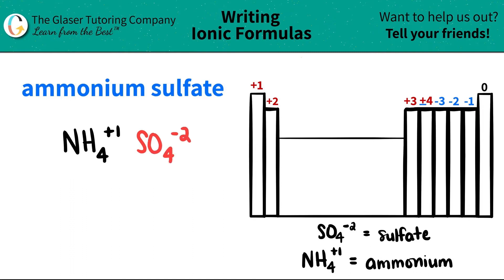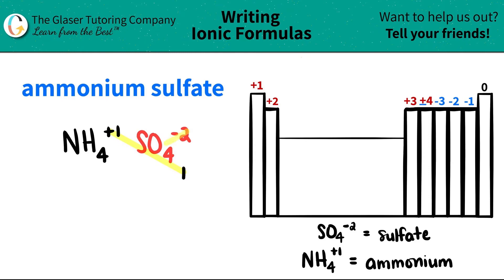Now, in order to find the formula, all we do is we take these charges and crisscross them down to tell us how much of each we need. So this plus one crisscrosses down telling me that I need one sulfate. And this negative two crisscrosses down telling me that I need two ammoniums. When you crisscross, the charges kind of vanish and it's just like a one or two or three or four.